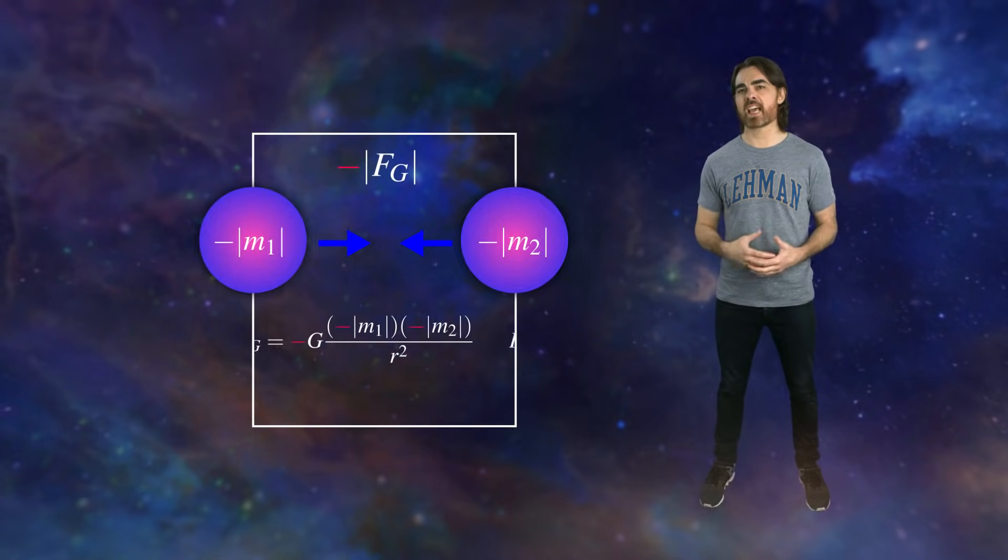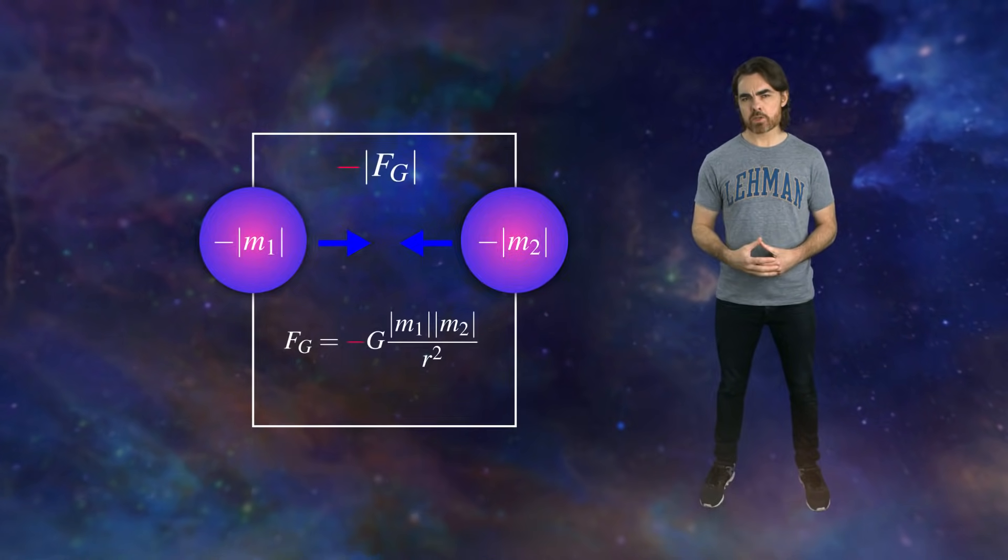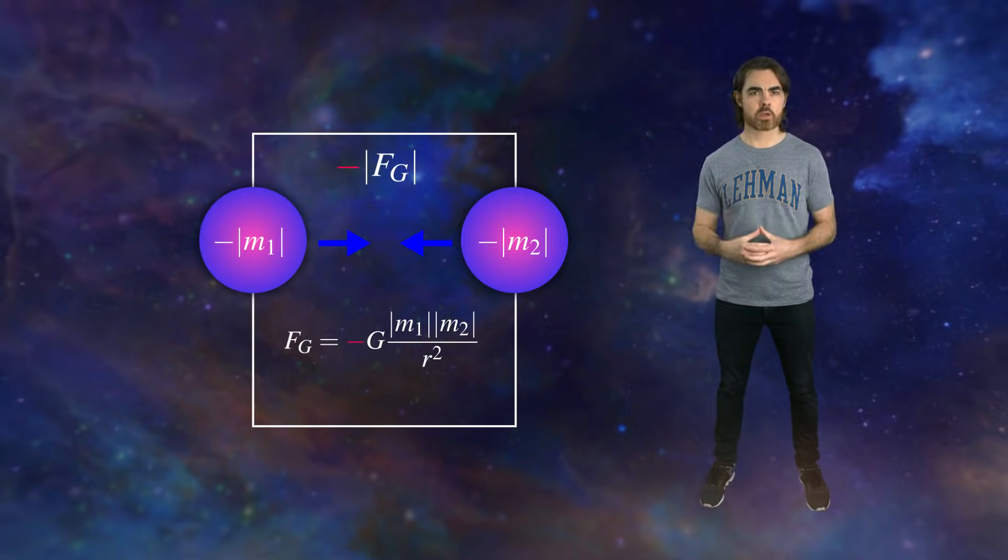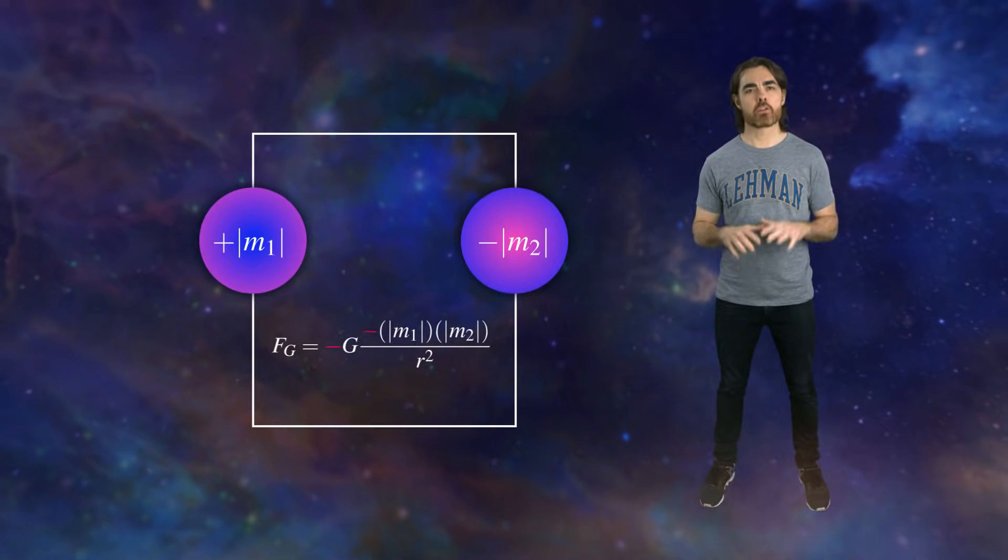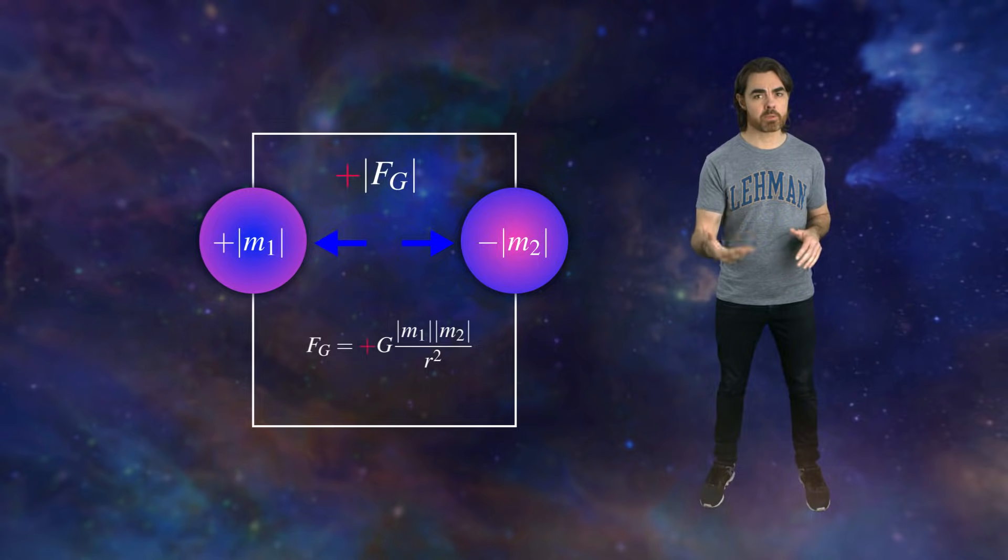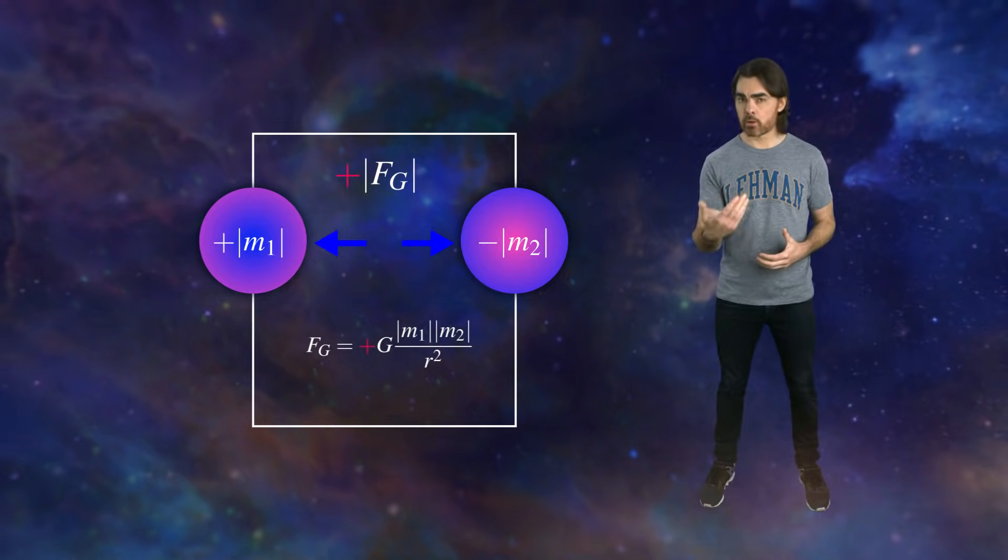Two negative masses should cancel out each other's signs and so also give you an attractive force. But with one negative and one positive mass, the final force of gravity has the opposite sign that makes it repulsive.